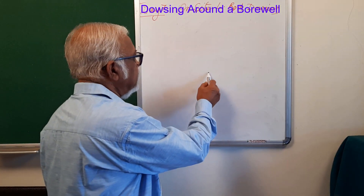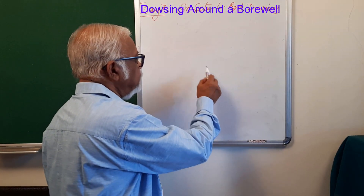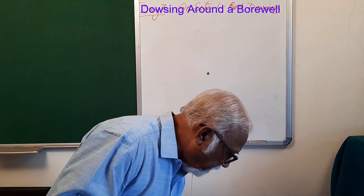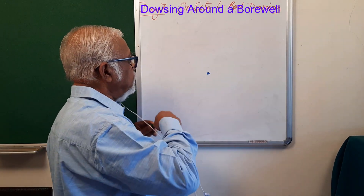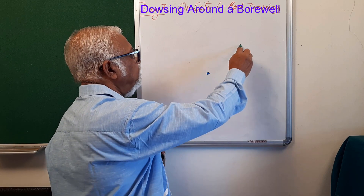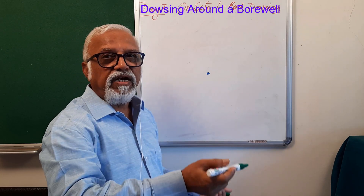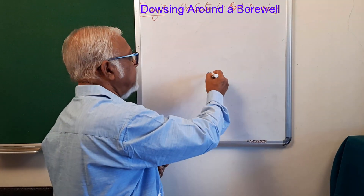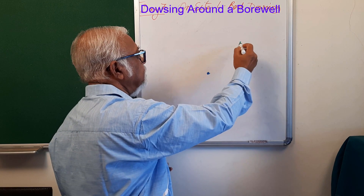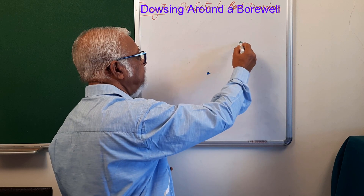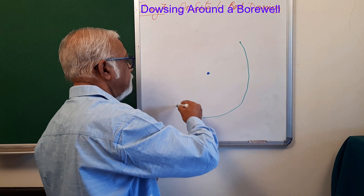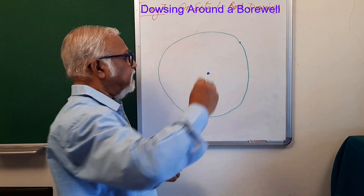This is the bore well or dug well which you have identified. What you have to do is go to the bore well point and from there, travel about 15 feet — or if you don't have a tape, travel about 15 steps. Using that 15 feet or 15 steps as the radius, you draw a circle, something like this.